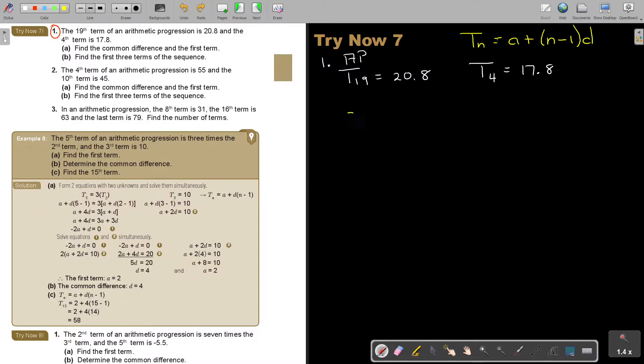I don't have A. Plus, and now N minus 1. I know it's the 19th term. I want to just put the D in front. So it's 19 minus 1. And that's equal to 20.8.